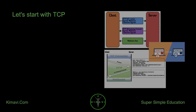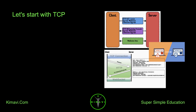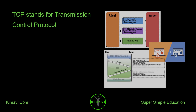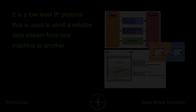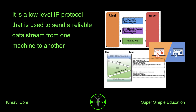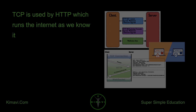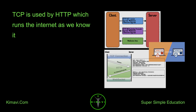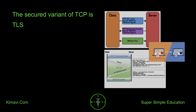Let's start with TCP. TCP stands for Transmission Control Protocol. It is a low-level IP protocol that is used to send a reliable data stream from one machine to another. TCP is used by HTTP, which runs the Internet as we know it.